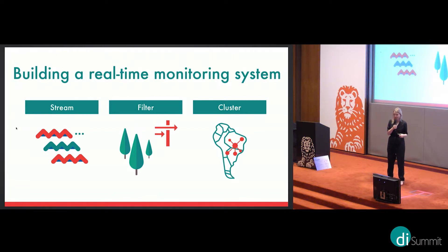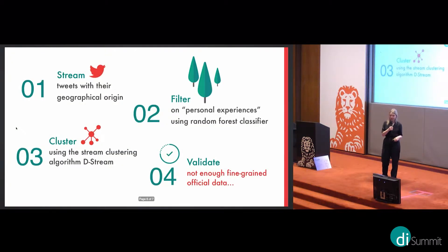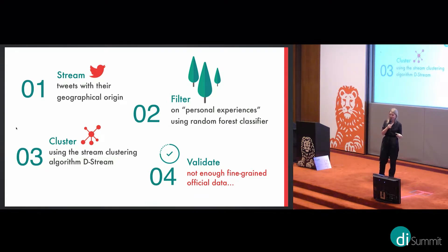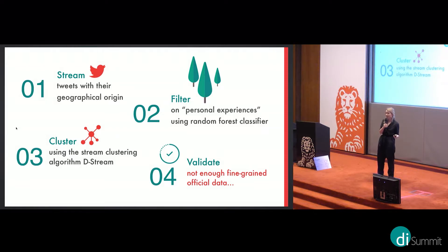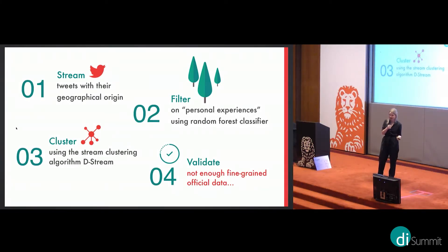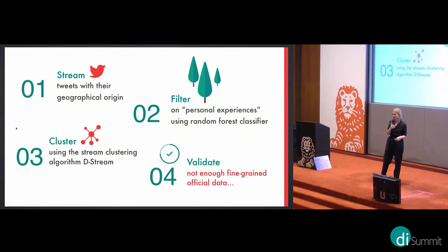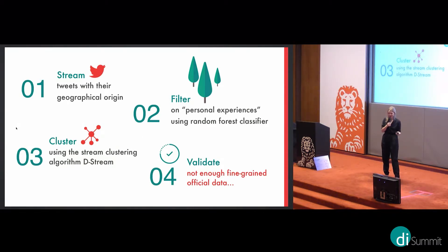To build a real-time monitoring system, you first start with a stream of tweets, then filter them, then apply a clustering step. You obtain tweets through the Twitter API — tweets containing the keyword or hashtag 'dengue' along with their geographical origin. We filtered those tweets based on personal experiences using a random forest classifier, a supervised algorithm. We labeled the tweets ourselves as personal experience or not — for example, 'I have dengue' or 'I'm in the hospital with dengue,' as opposed to a governmental report.